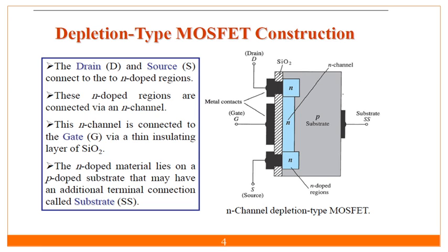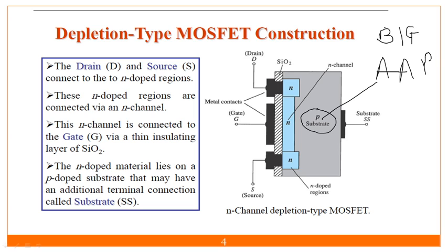Starting with the construction: we take either a P-type substrate. In the comment box, tell me — for a P-type substrate, which impurity do I add? Either boron, indium, or gallium — or arsenic, antimony, and phosphorus? Give me the answer in the chat box.